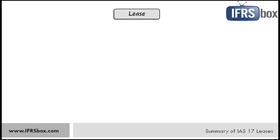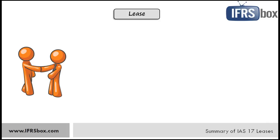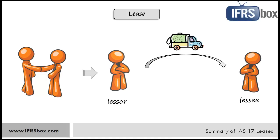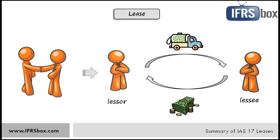So what's a lease? A lease is an agreement whereby a lessor conveys the right to use an asset for an agreed period of time — the lease term — to the lessee in return for a payment or series of payments. Those payments are called minimum lease payments, and in fact they are the payments over the lease term that the lessee is required to pay to the lessor, excluding any cost of services, taxes, and so on.